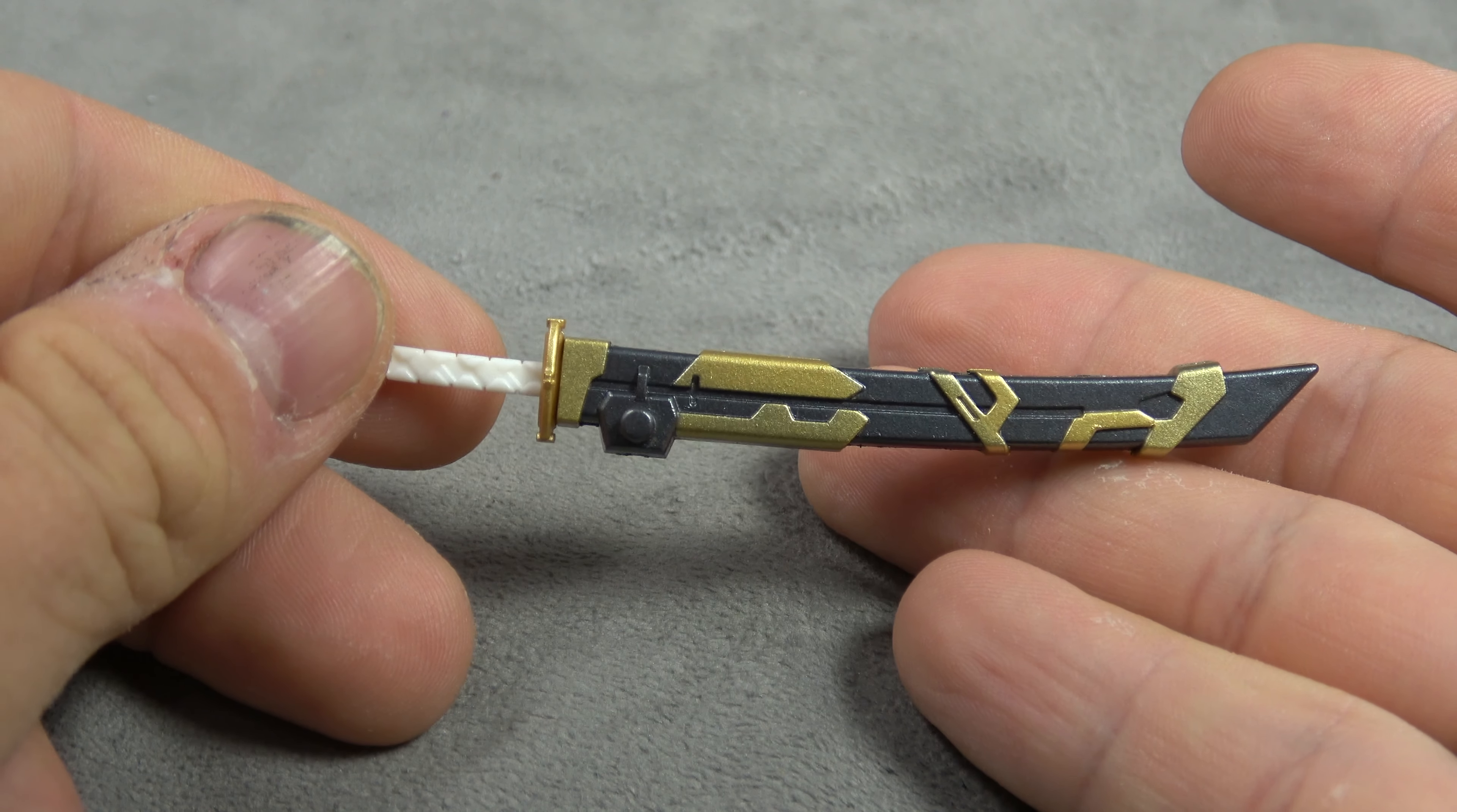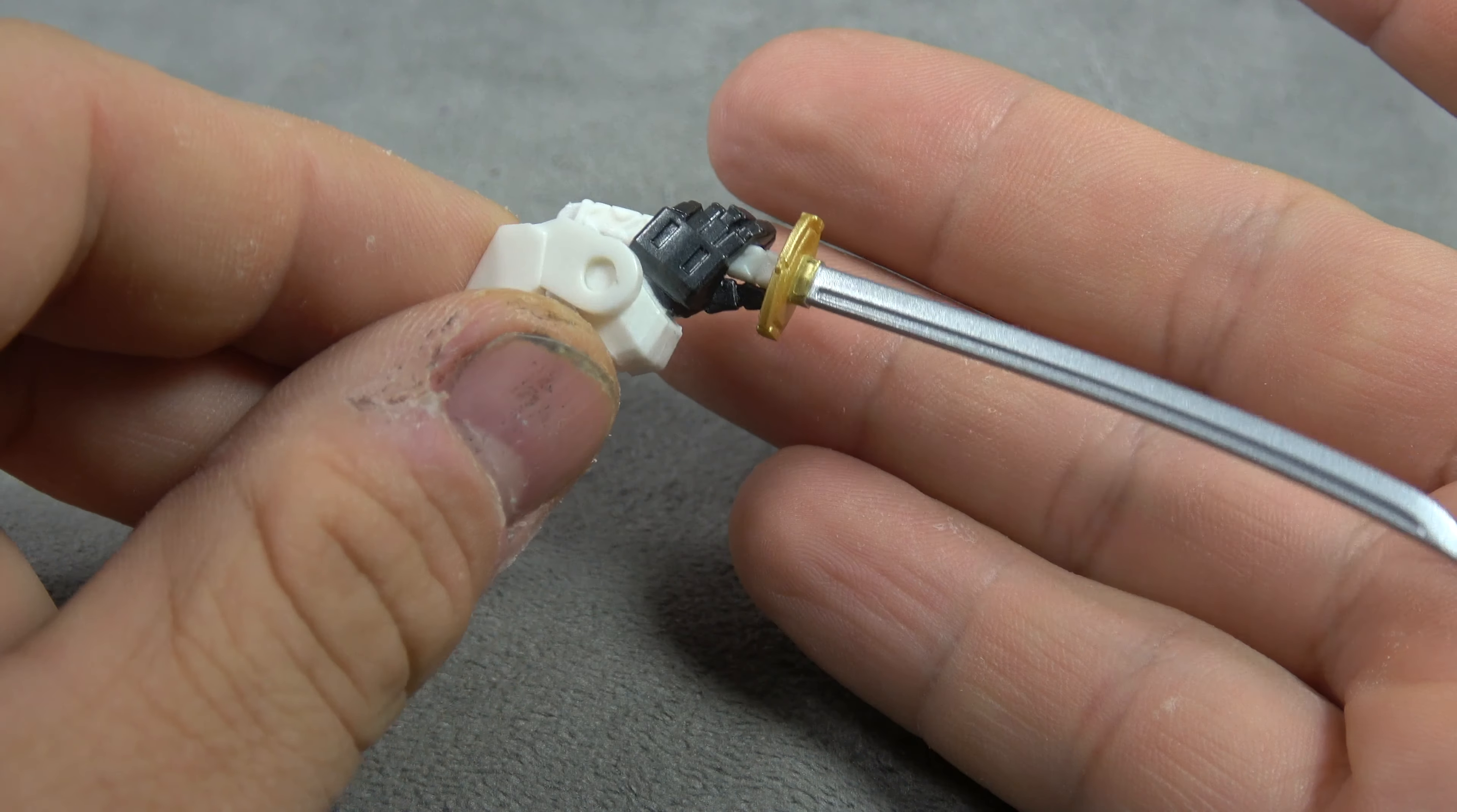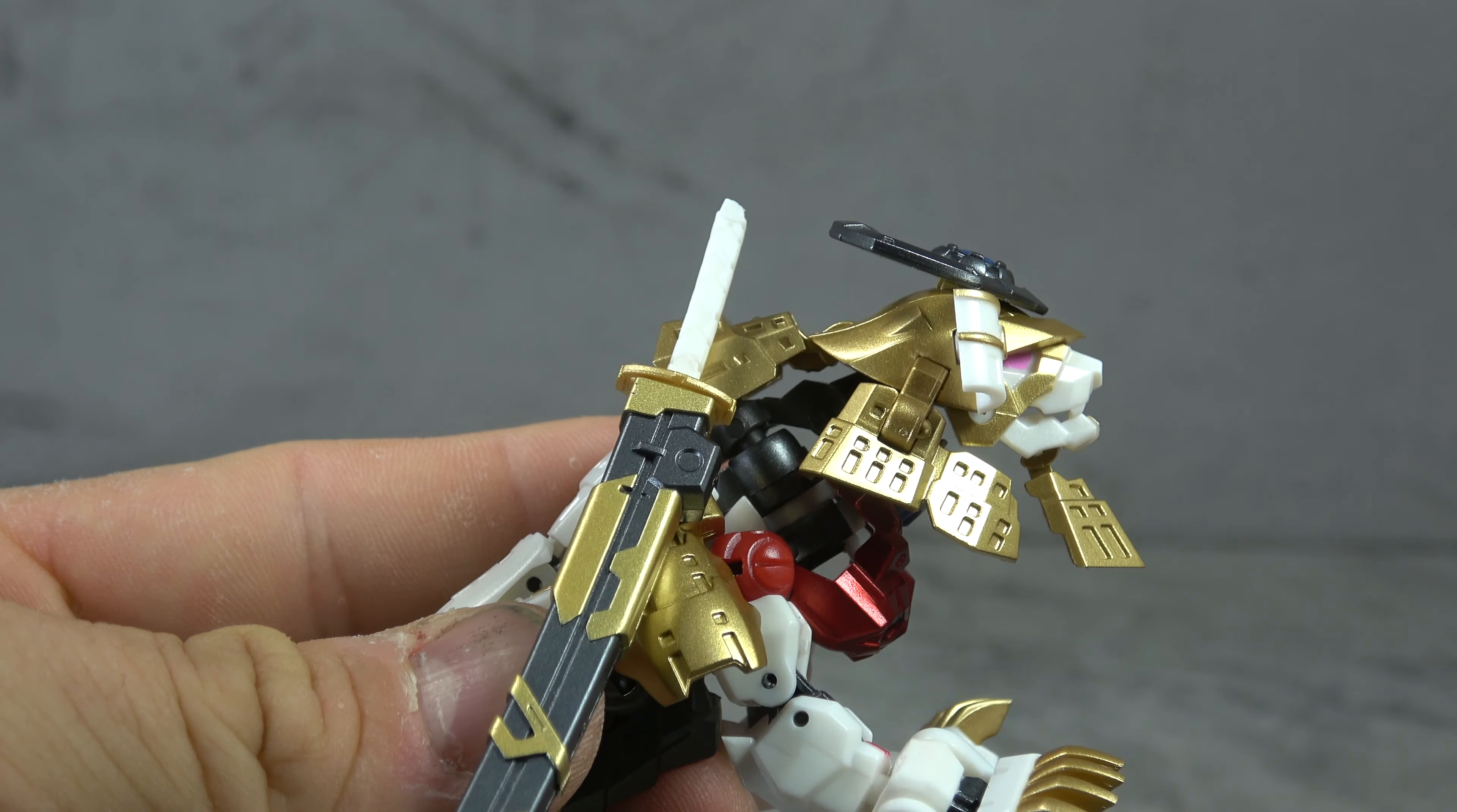He comes with a nice assortment of hands: two posing hands, two stylized bent wrist sword holding hands, and two standard holding hands. Then he comes with this sword and scabbard. The sword is removable with gold base paint and silver for the blade, whereas the scabbard has the base paint with gold added on. The scabbard will peg in two holes on his waist, one on each hip skirt.